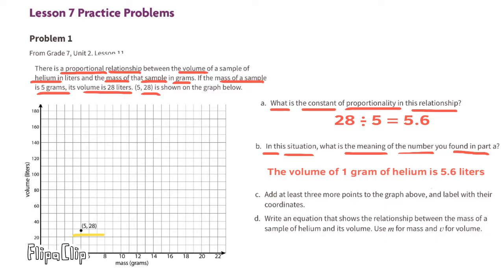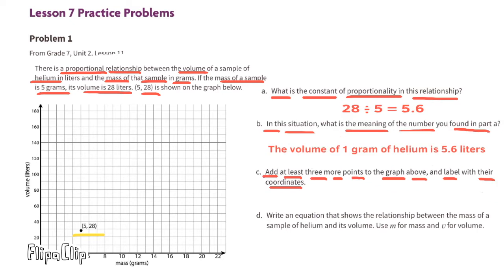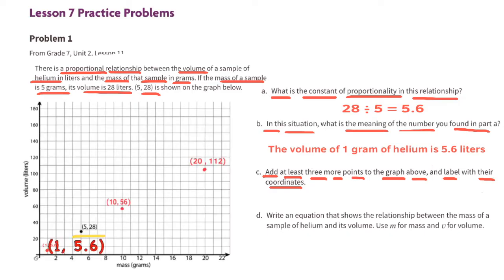Part c: Add at least three more points to the graph above and label with their coordinates. In the lower left hand corner you can see a point labeled at coordinates 1 and 5.6. The next point up that I made is located at 5 and 28, then the next one up is located at 10 and 56, and finally the last point is located at 20 and 112.